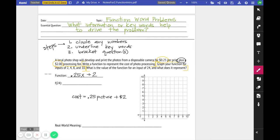Graph for the inputs of 2, 4, 8, and 10. So if I print 2 pictures, $0.25 times 2 is $0.50 plus $2 is $2.50. So pictures, dollars, 2 pictures is $2.50. Four pictures, $0.25 times 4 plus $2 tells me that's going to cost me $3.